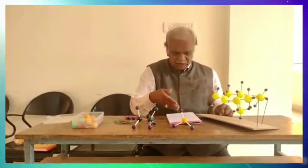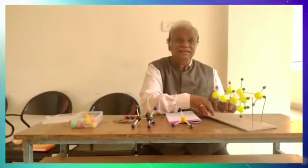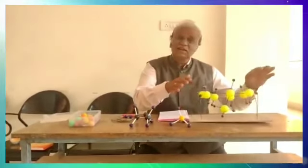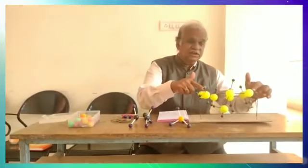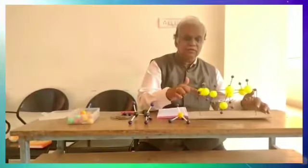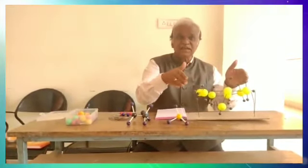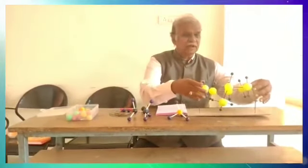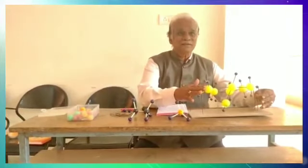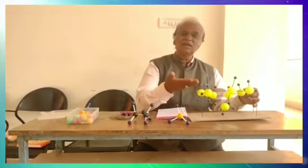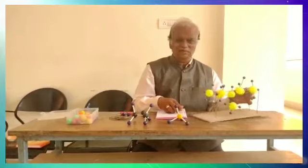C4H10 represents one type of arrangement, but the same C4H10 can be arranged differently. This is another structure having the same number of carbon and hydrogen — 1, 2, 3, 4, 5, 6, 7, 9, 10 — with 3 carbons in a straight chain and one carbon in a side chain. So this is the formula of 2-methylpropane, while the other is butane. These contain the same number of carbon and hydrogen atoms but differ in structure — this is structural isomerism.